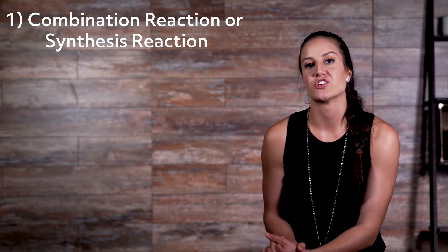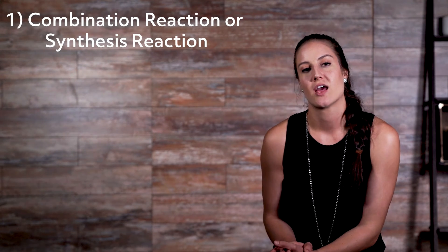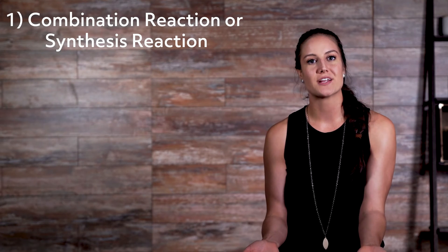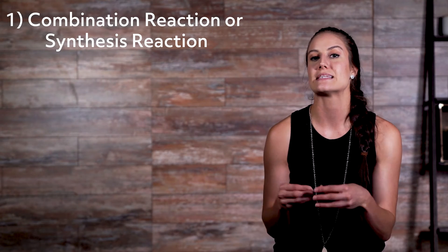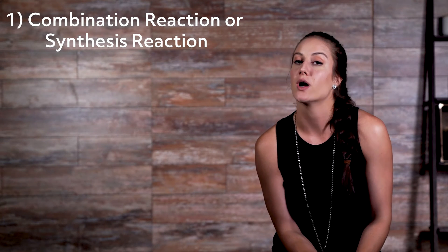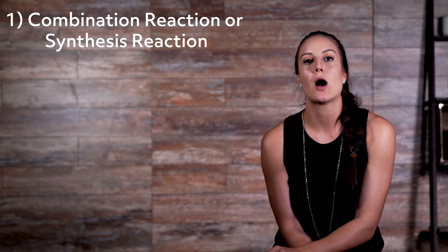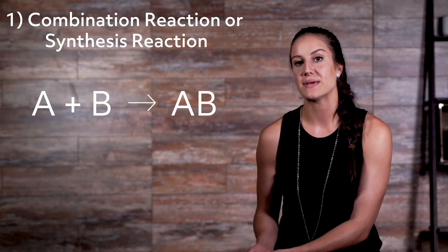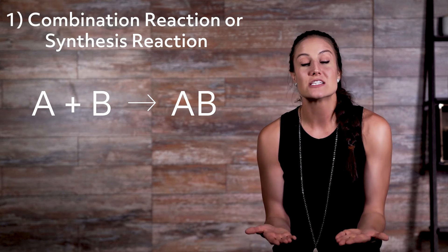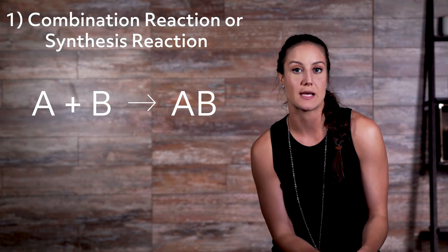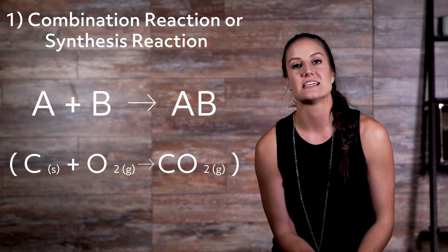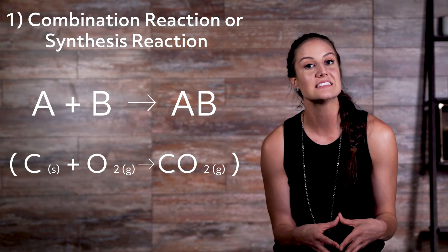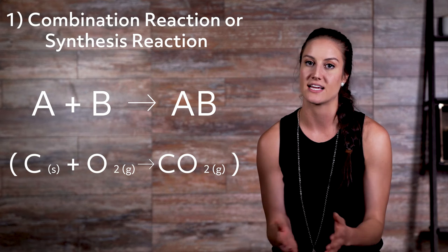Now let's take a look at five different types of chemical reactions. Number one: combination reaction, or synthesis reaction. A combination reaction is pretty straightforward — it can be defined as when substances are mixed together and they form a new compound. The equation looks like this: A plus B yields AB. These two substances literally combine to form a new substance. An example of this is carbon solid and oxygen gas reacting together to form carbon dioxide gas.